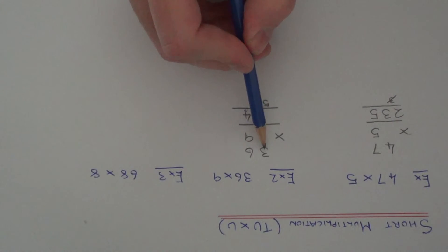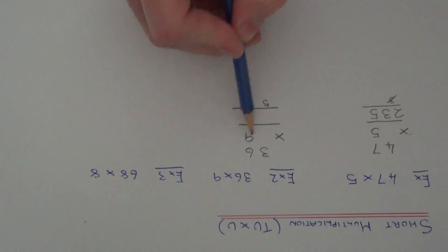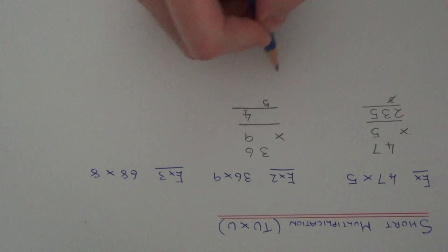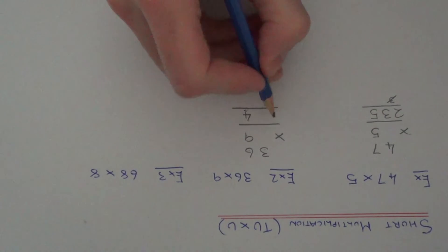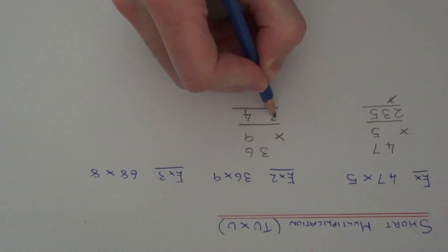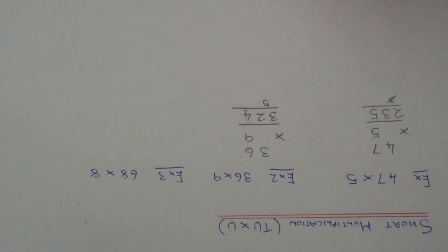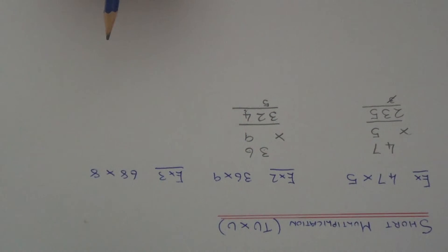Then we need to work out 3 times 9 which is 27, add on the 5 which is 32. So our final answer is 324.